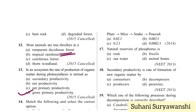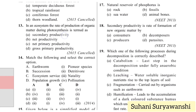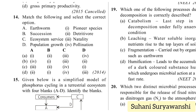Match the following: earthworm is connected with detritivore; succession is connected with pioneer species; ecosystem service is connected with pollination; and population growth is connected with natality. The correct answer is option D.